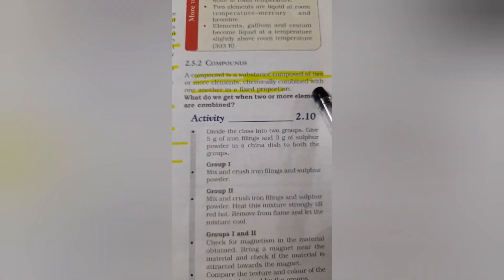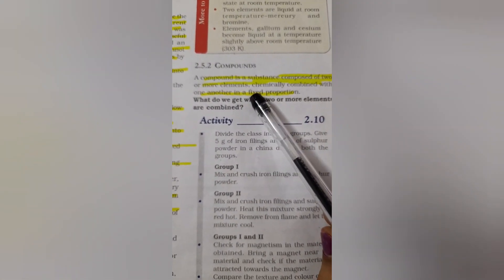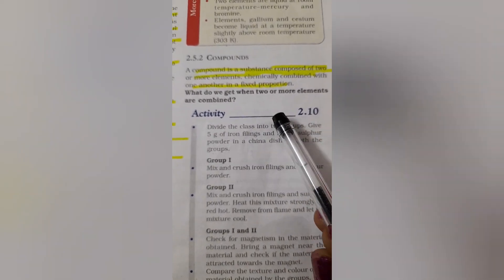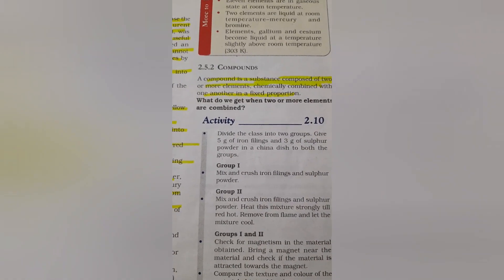What is a compound? Compound is a substance which is composed of two or more elements. When two or more elements combine together they form a compound.